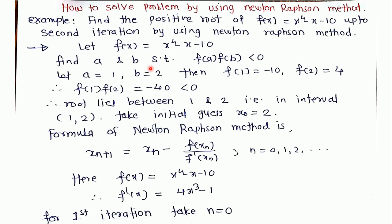We find a and b using the intermediate value theorem. If you don't know what the intermediate value theorem is, please see the video related to it. If an initial guess is not given, we take the initial guess anywhere within this interval or at the midpoint of the interval. I am taking the initial guess x₀ = 2.